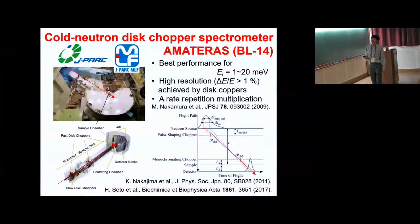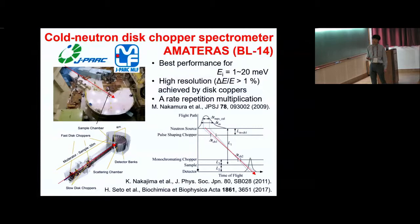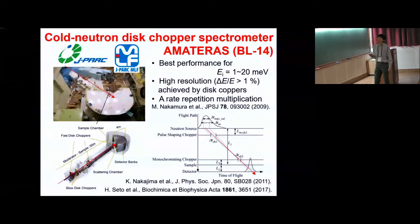This spectrometer is best suited for investigating low-energy excitations, such as magnetic excitations especially below 20 meV. By rotating disk choppers for pulse shaping and monochromating, high resolution down to 1% of the incident neutron energy can be achieved.